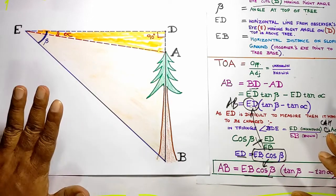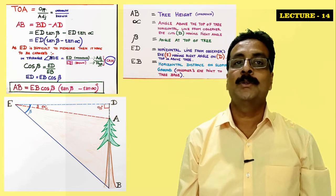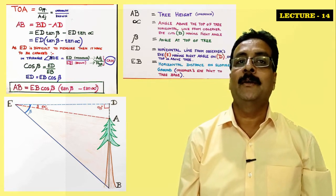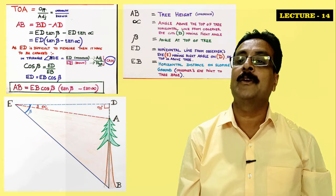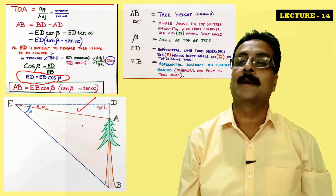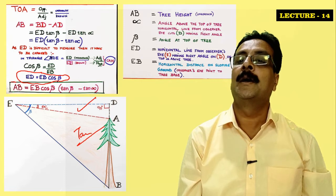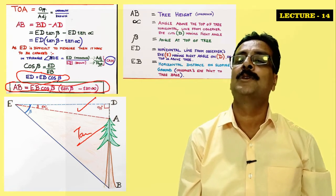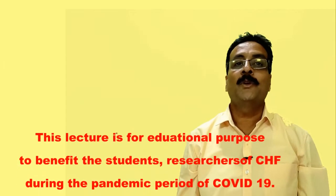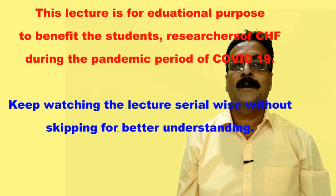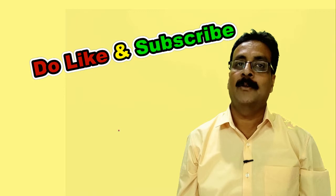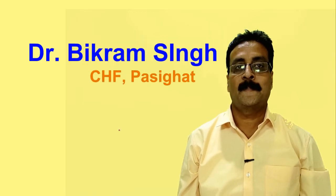Now we understand Case 1, Case 2, and Case 3 — how to measure the height of a vertical tree by trigonometry using tangent and cosine. The key insight is where to apply cosine and where to apply tangent. By taking the angles alpha and beta from the instrument and the horizontal distance EB by measuring tape, we can calculate the tree height. Thank you very much for watching lecture number 14.